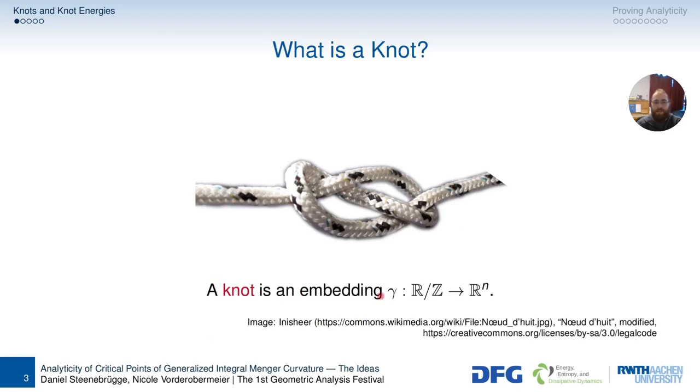On the other hand, I say a knot is an embedding, called gamma from R mod Z, so the unit circle basically, into Rn or R3, whatever you prefer. Of course, this piece of rope does not really represent a mathematical structure, so let's take a line going through the center of the rope or something like that.